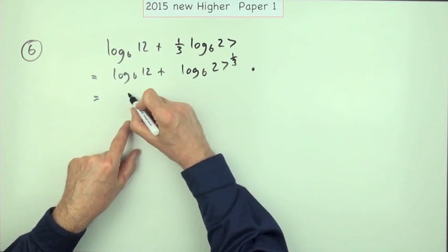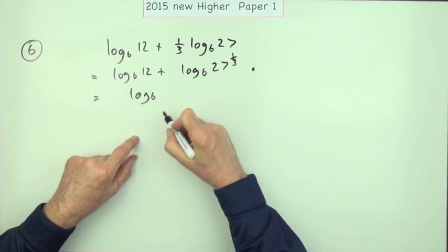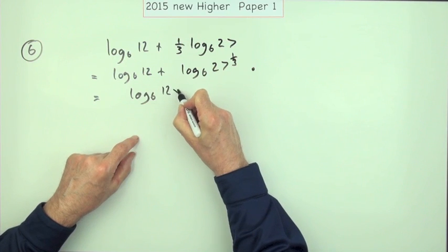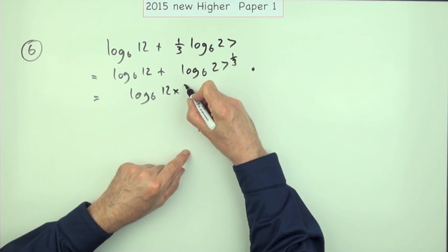So adding these logarithms means you must have been multiplying these numbers. So log base 6 of 12 times 27 to the power ⅓—or you might want to write that as the cube...